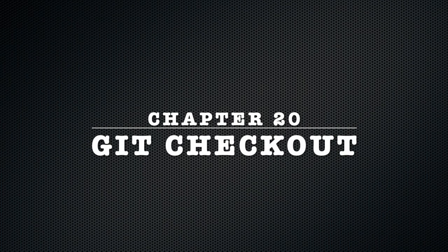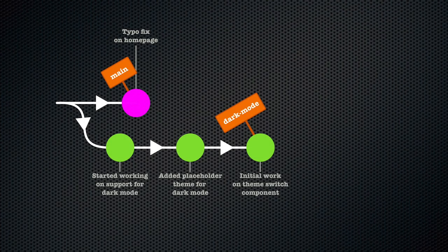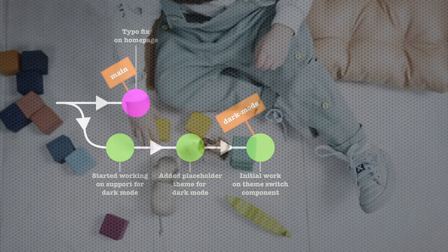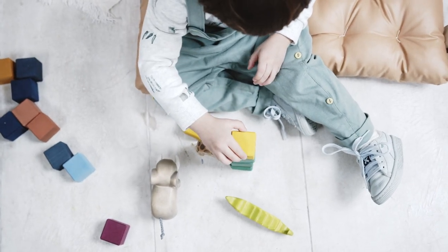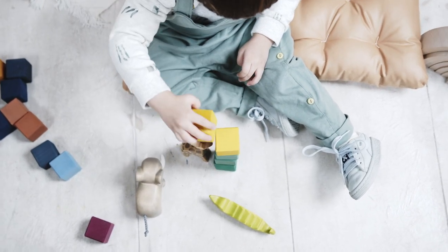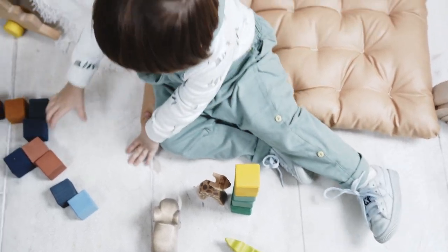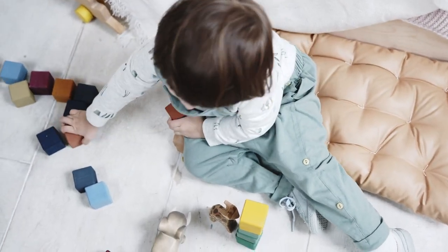Chapter 20: git checkout. In the previous chapter, we used the git switch command to create a branch and switch to it — or in other words, make it active by moving the head label to the tip of that branch. We already mentioned that git only does a couple of things, and the various commands are typically just ways to combine those different things. The git switch command is a good example to illustrate this.